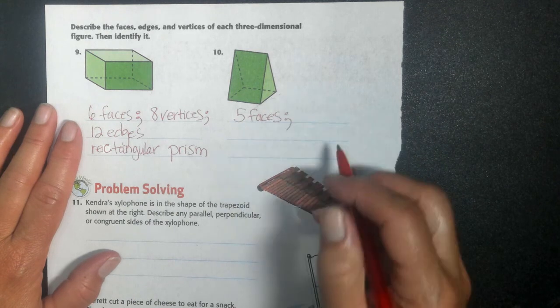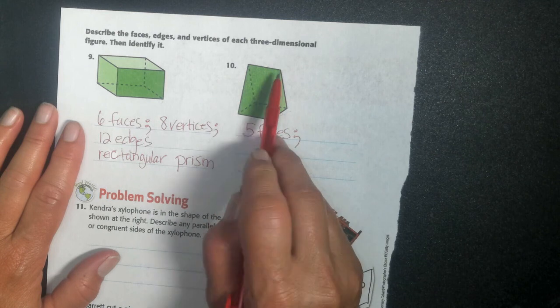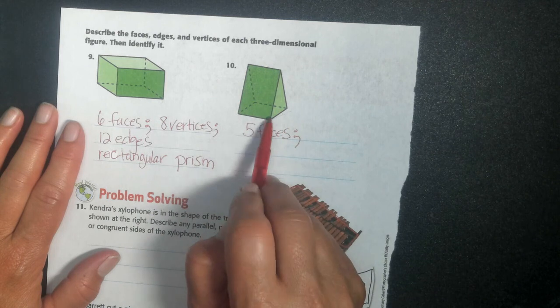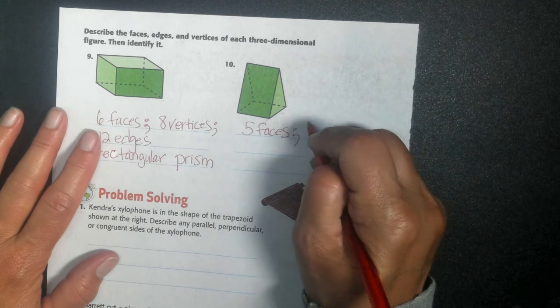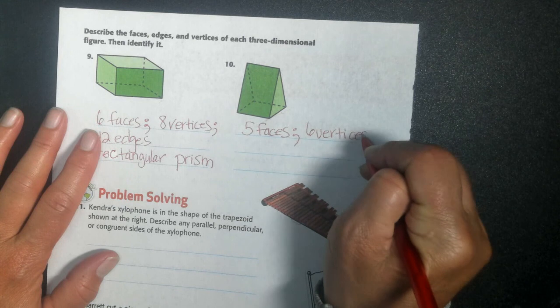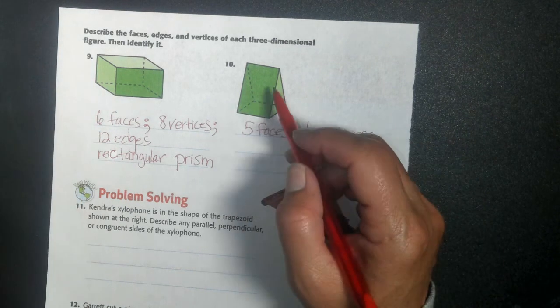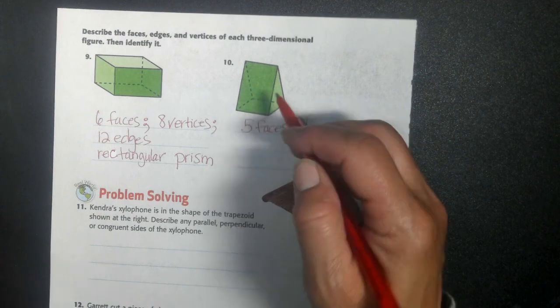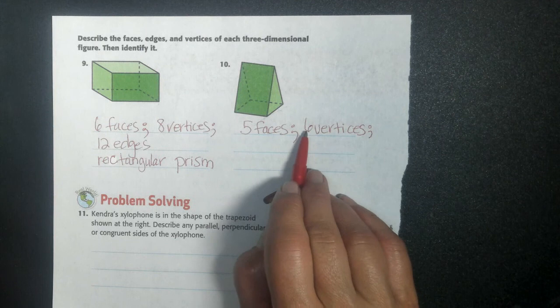How many vertices does it have? Pointy corners. One, two on the top, one, three, four over here, and in the back, five, six. So it has six vertices. And now I'm counting how many edges where the two sides meet.